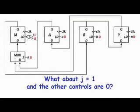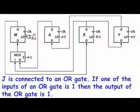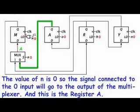What about if J is equal to 1 and the other controls are 0? J is connected to an OR gate. If one of the inputs of an OR gate is 1, then the output of the OR gate is 1. The value of N is 0, so the signal connected to the 0 input will go to the output of the multiplexer. And this is the register A.